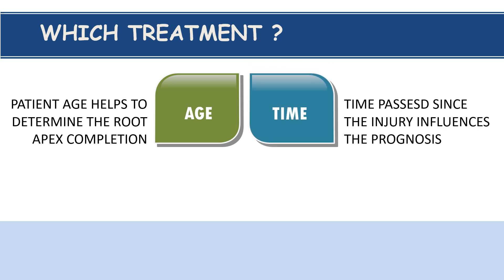The next factor is time. Time passed since the injury is very important. If the patient reports within the first one hour of the injury, the prognosis is the best. If he reports within 24 hours, the prognosis is still good. After 24 hours, as the time keeps passing, the prognosis starts getting compromised.